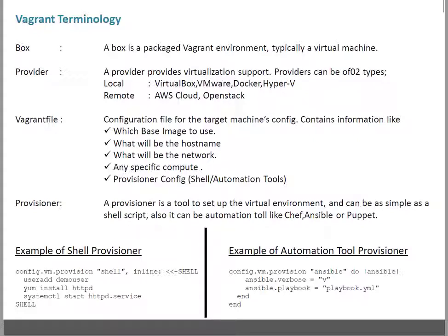Provider, as I mentioned in the last slide, is basically the software that provides virtualization support. There are two types of providers: local and remote. Local providers include VirtualBox, VMware, Docker, and Hyper-V — these are installed on your machine for a locally managed virtualization stack. The other type is remote providers, which include Amazon Cloud, OpenStack, and Google Cloud.